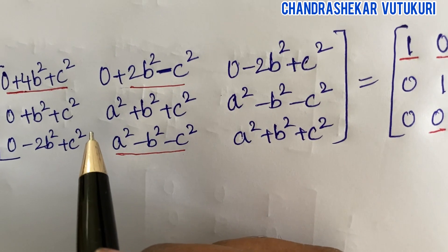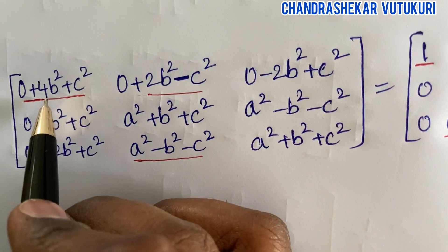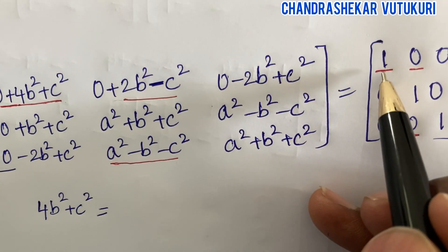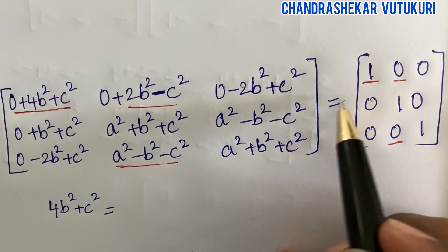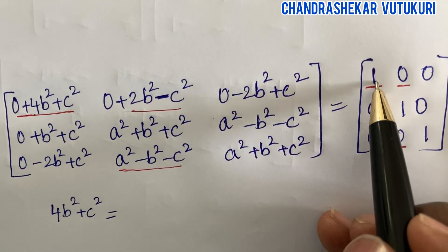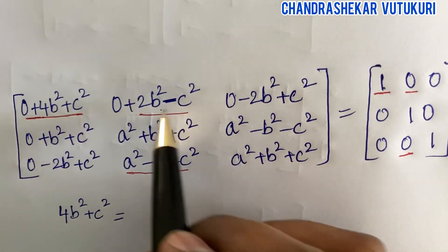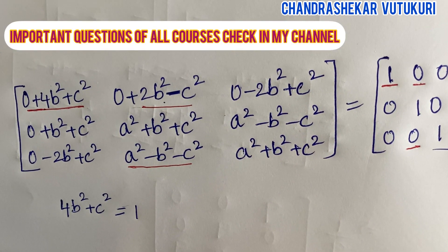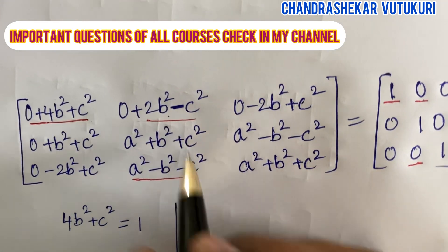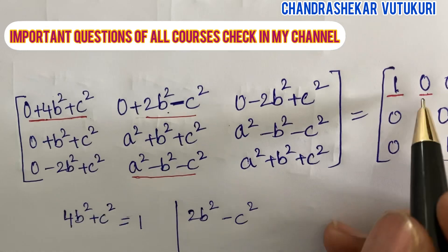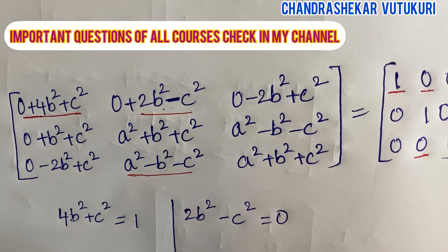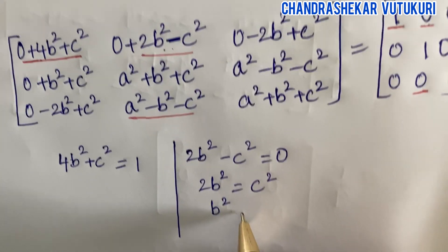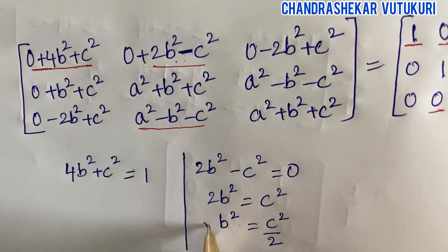Now I equate the terms. The element 4b squared plus c squared must equal the corresponding identity matrix element, which is 1. So: 4b² + c² = 1. Also, the off-diagonal element 2b² minus c² must equal zero. From 2b² = c², we get b² = c²/2.